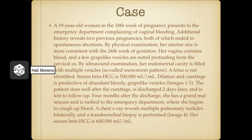A 19-year-old woman in the 18th week of pregnancy presents to the emergency department complaining of vaginal bleeding. Additional history reveals two previous pregnancies, both of which ended in spontaneous abortions. By physical examination, her uterine size is more consistent with the 24th week of gestation. Her vagina contains blood and a few grape-like vesicles are noted protruding from the cervical os.